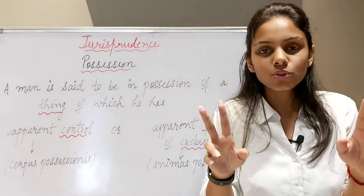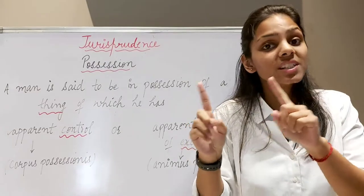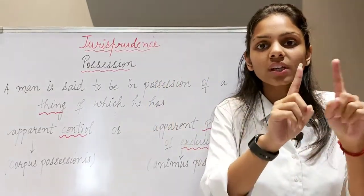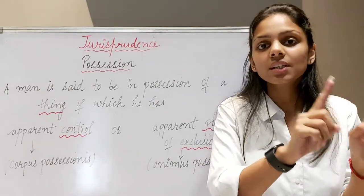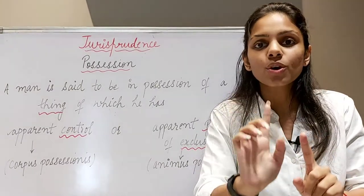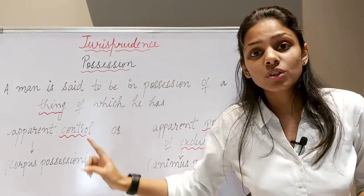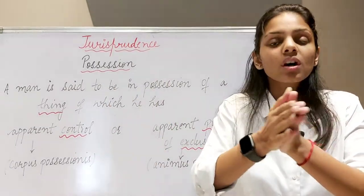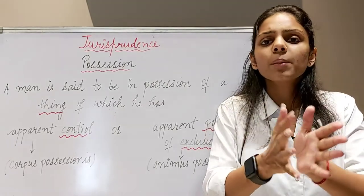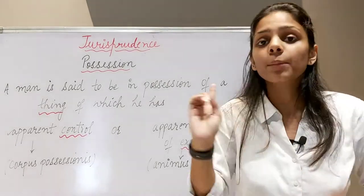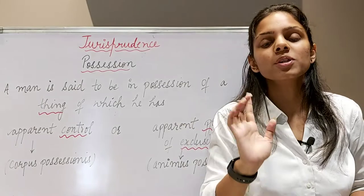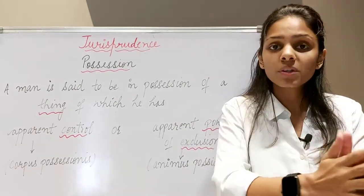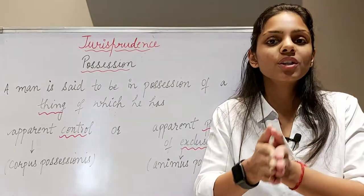I hope guys ye dono points clear ho chuke hain. Ek jagah mere bookshelf ki custody mere paas nahi thi — temporary physical absence of a person from an object — woh object aapke paas shayad ek time par na ho, lekin aapke paas uska animus hai, toh aapke paas possession rahegi. Issi cheez se nikal ke hamare paas do tarah ki possession aati hai — which is possession in fact and possession in law.